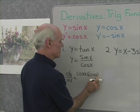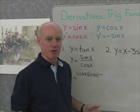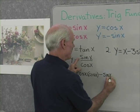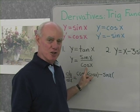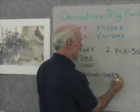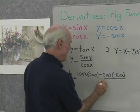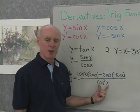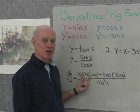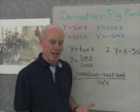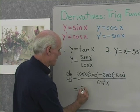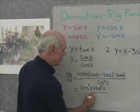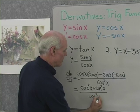The derivative of sine is cosine. Minus — that subtraction sign is due to the quotient rule — the numerator, sine x, times the derivative of the denominator, which is the derivative of cosine: negative sine. And all that is divided by the denominator squared, cosine squared x. So I have cosine times cosine, that's cosine squared, minus sine times minus sine, that's positive sine squared, so this comes out to be cosine squared x plus sine squared x, all divided by cosine squared x.